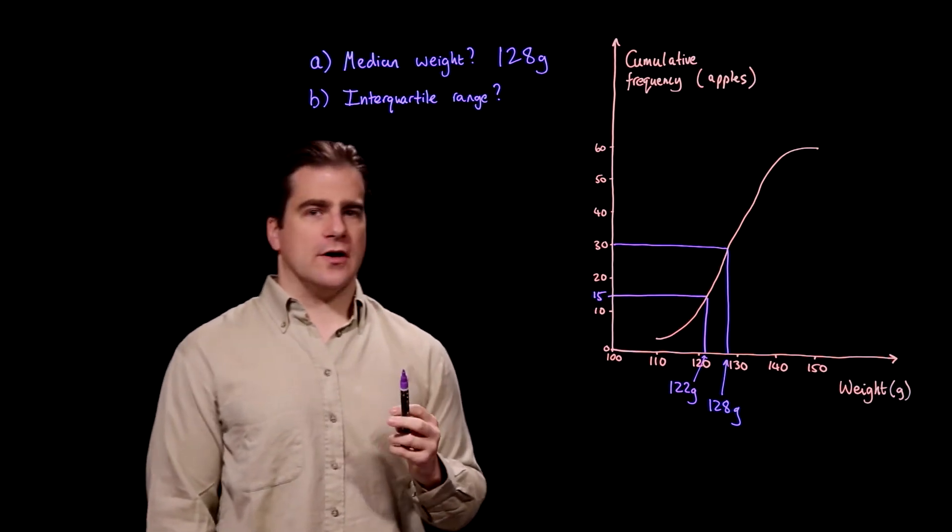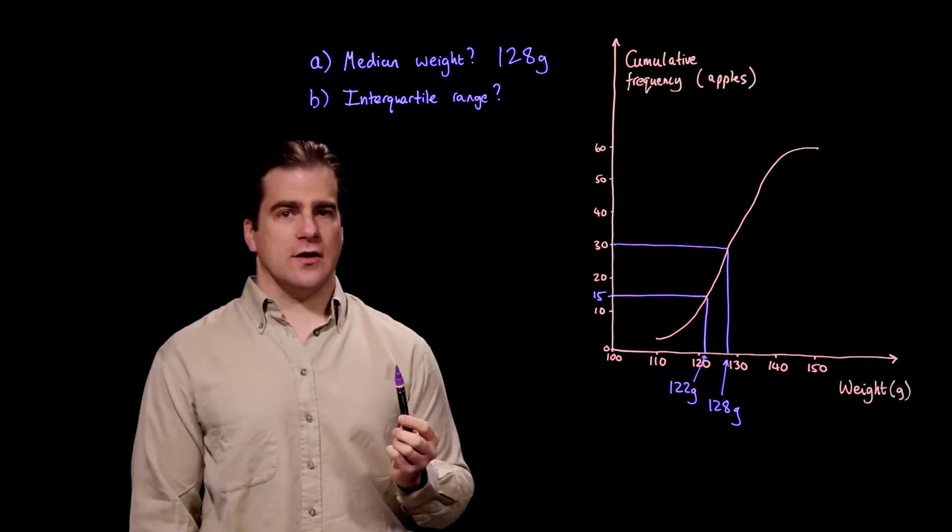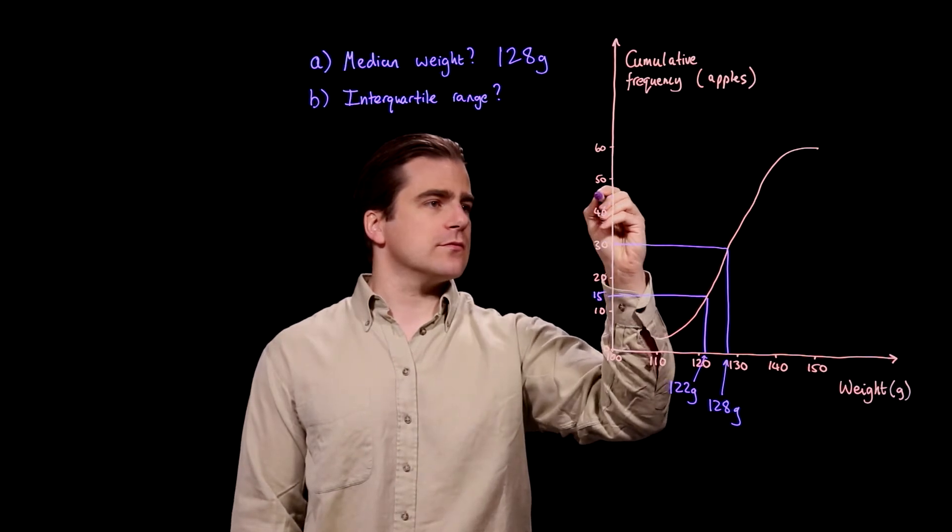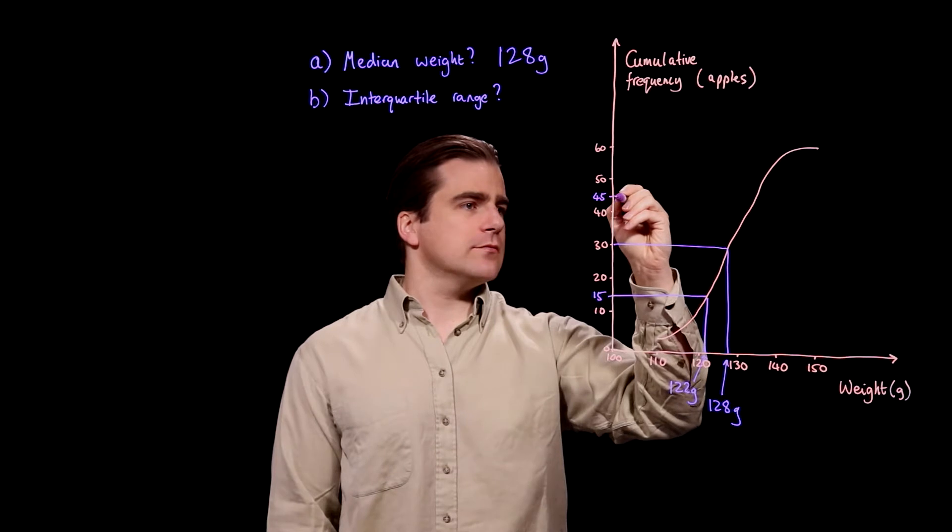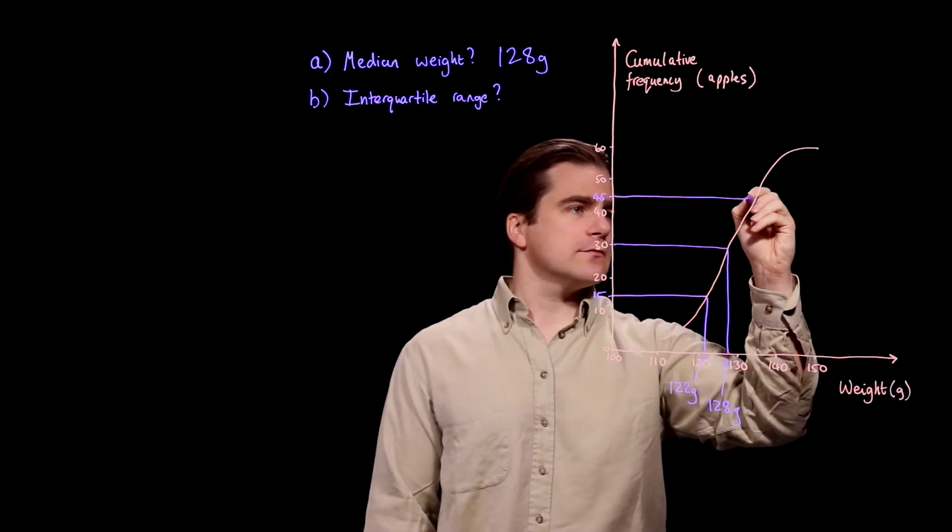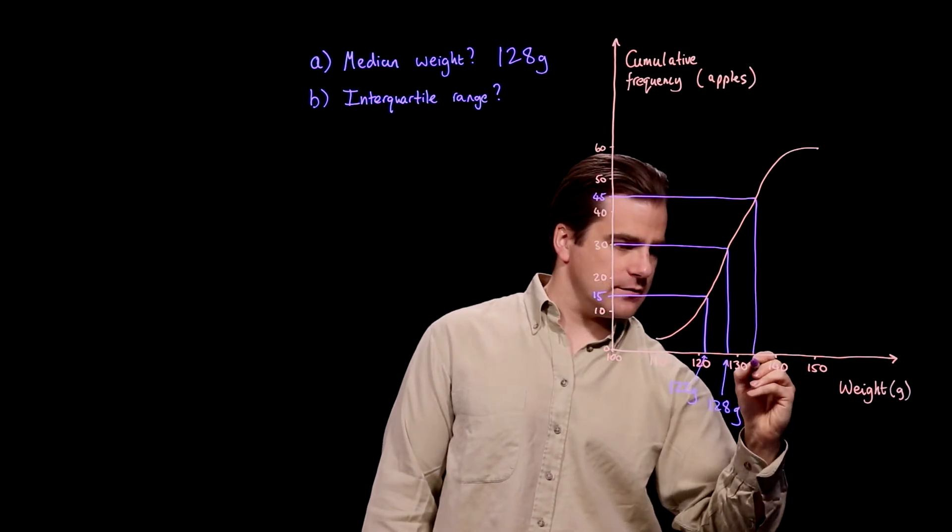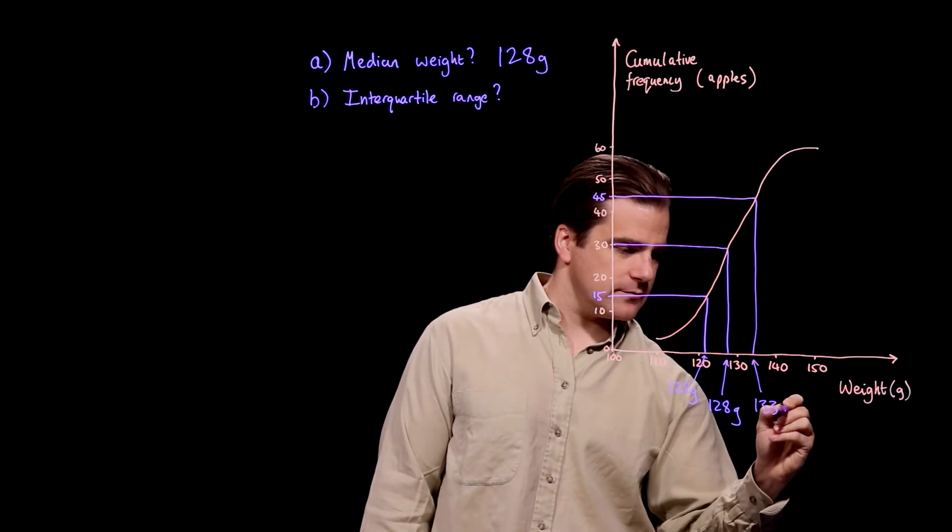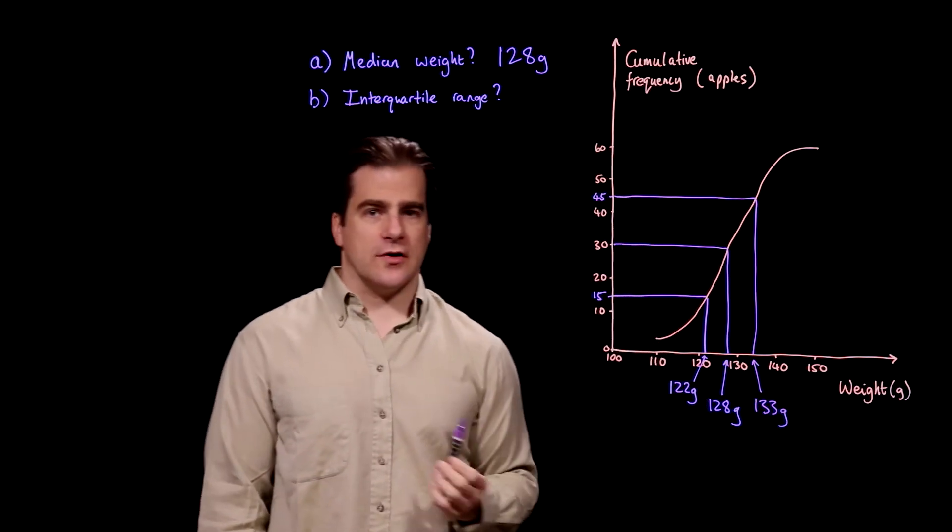And the upper quartile, you take 3 quarters of 60, which is 45. Go across and down. And you get 133. So that's the upper quartile.